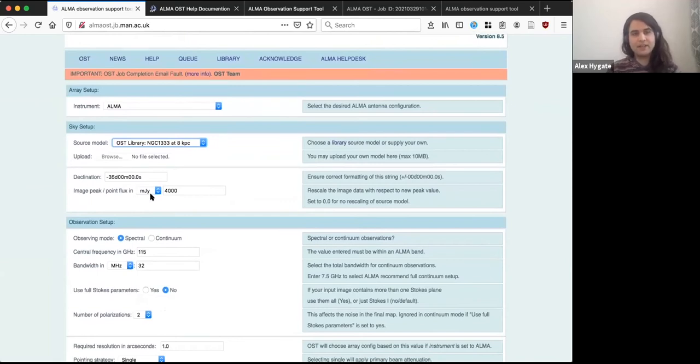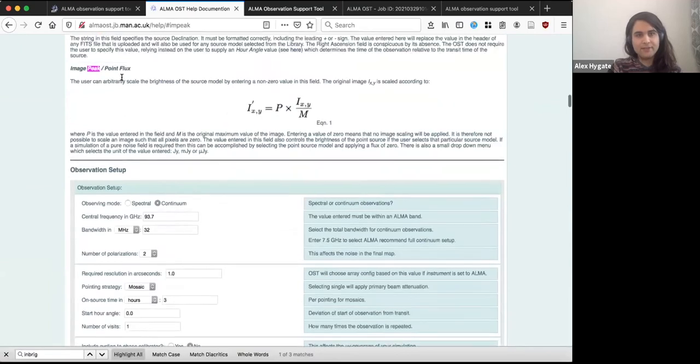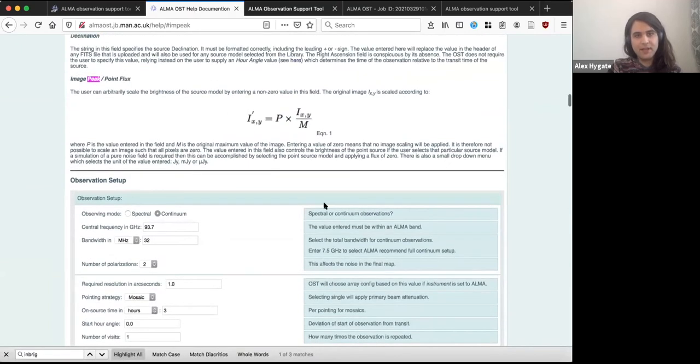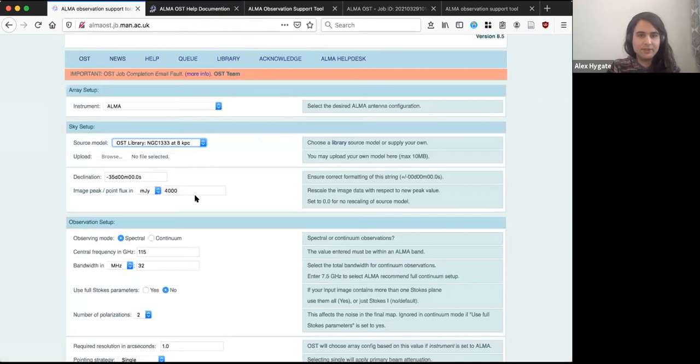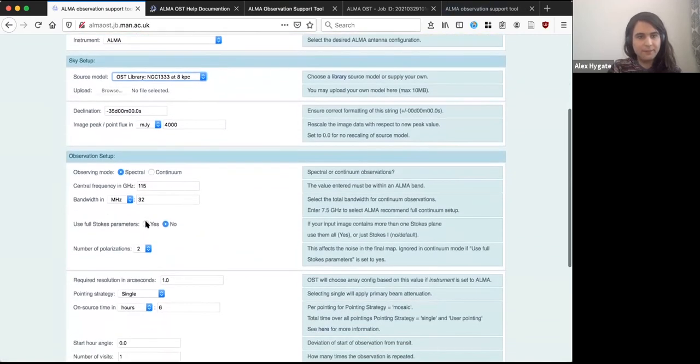Then you just need to enter the declination of your source awareness in the sky, and the image peak point flux. And so some of these quantities can be a bit confusing. What is image peak, or point flux, for example, but there's very good help documentation. So if you go to help here, you can find, for example, the definition of the image peak point flux. And you can see there's an equation here that would let you calculate this from whatever measurement you had of the flux. And then so if you've done this, you just enter it in here. And I should say that in general, there's comprehensive help for all of these different options. If you get confused,